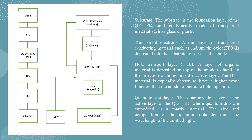This is the block diagram of QD LEDs. The substrate is the foundation layer, typically made of transparent material such as glass or plastic. A transparent electrode — a thin layer of conducting material such as indium tin oxide — is deposited on the substrate to serve as the anode. A hole transport layer of organic material is deposited on top of the anode to facilitate the injection of holes into the active layer, chosen to have a higher work function than the anode. The quantum dot layer is the active layer where quantum dots are embedded in a matrix material.